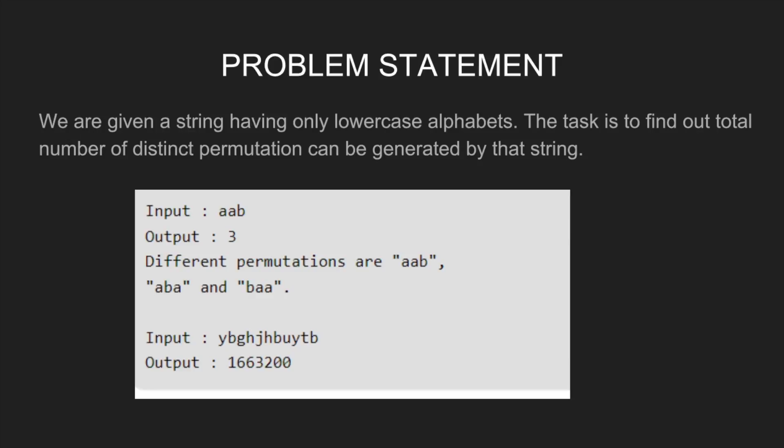If the input string is 'aab', the output will be 3. The different permutations are 'aab', 'aba', and 'baa'. If the input string is 'ybghjhpuytv', then the output will be 1663200.